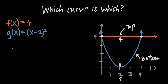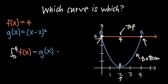From there, setting up the integral is straightforward. We integrate from 0 to 4 since those are our intersection points, and we take the top curve minus the bottom curve. That gives us the integral from 0 to 4 of f of x minus g of x dx, or plugging in: the integral from 0 to 4 of 4 minus x minus 2 quantity squared dx. Finding intersection points is simple, and setting up the integral is simple too — the trickiest part was figuring out which curve was on top and which was on the bottom.